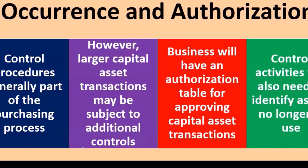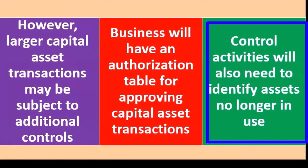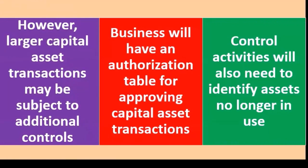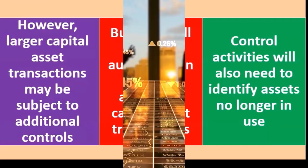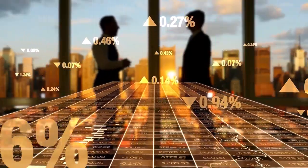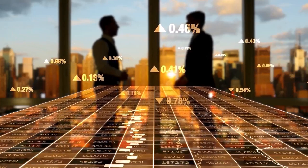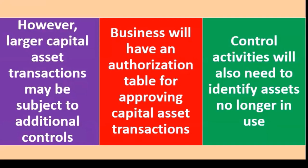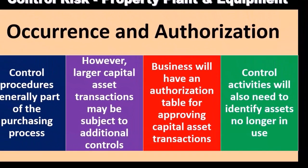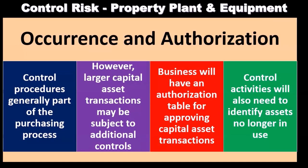Businesses will have an authorization table for approving capital asset transactions. Control activities must also identify assets no longer in use. Assets that are obsolete or not being used should be removed from the books. Even if an asset is fully depreciated and has a net book value of zero, both the asset and its accumulated depreciation are overstated on the books, so it still needs to be disposed of.